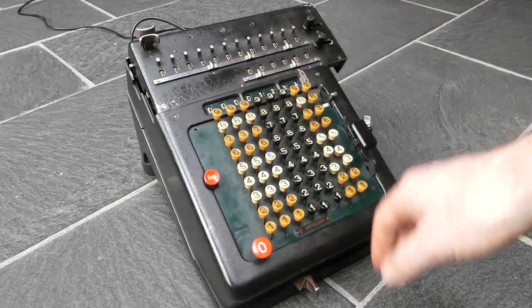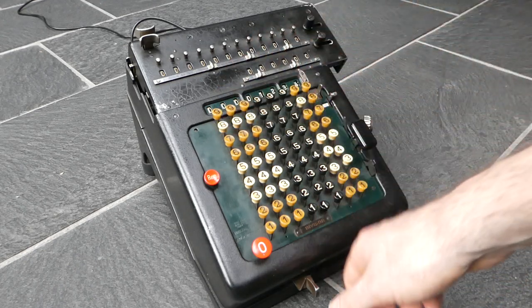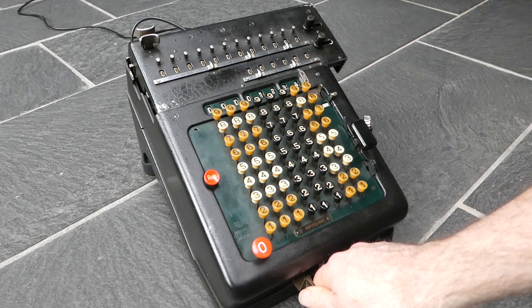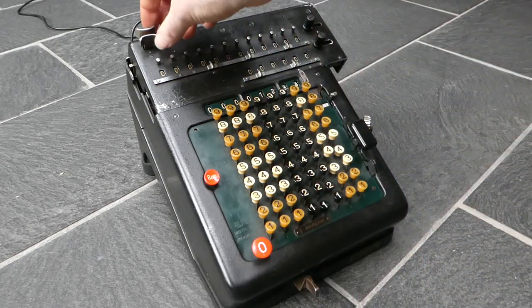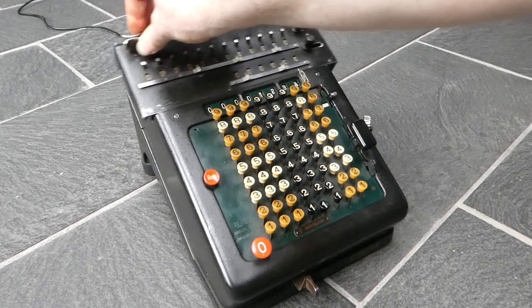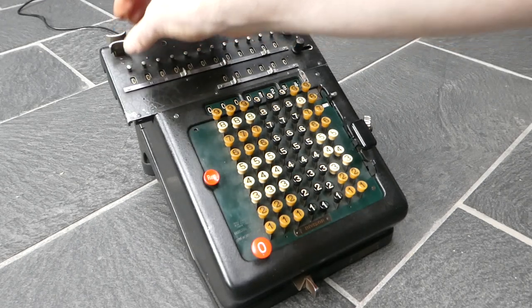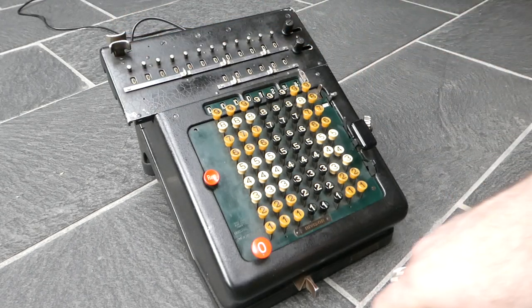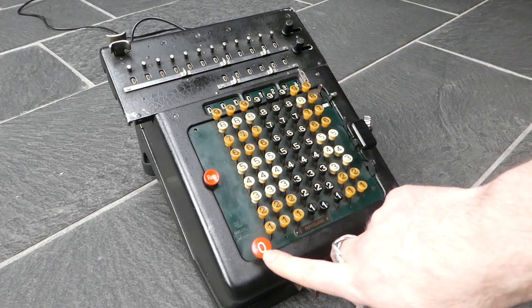By the way, you can shift the carriage not just with this button at the front step by step, but you can also release it here so that you can move it freely any amount. This button here clears the keyboard.